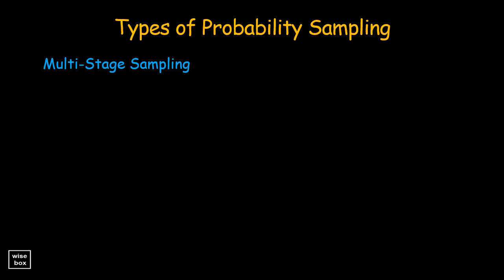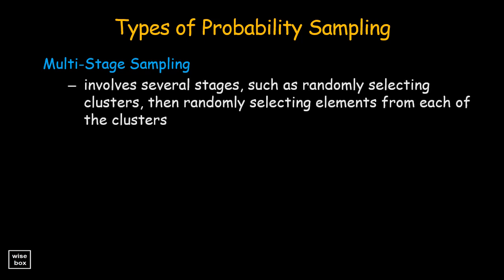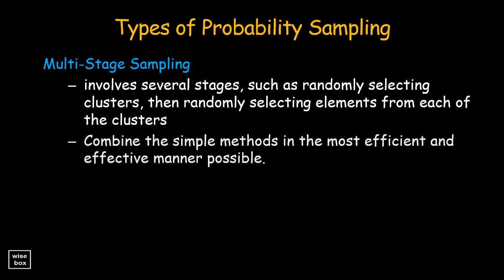Multi-stage sampling is a probability sampling procedure that involves several stages, such as randomly selecting clusters from a population, then randomly selecting elements from each of the clusters. We can combine the simple methods in a variety of useful ways that help us address our sampling needs in the most efficient and effective manner possible.